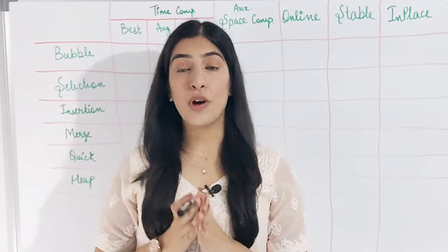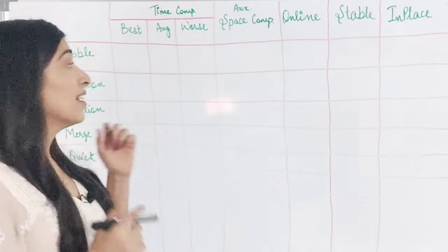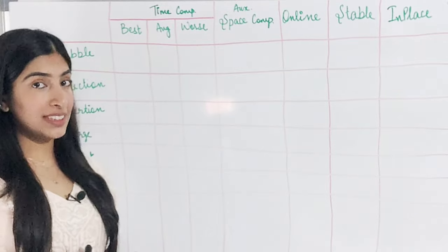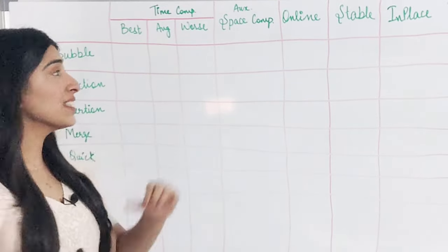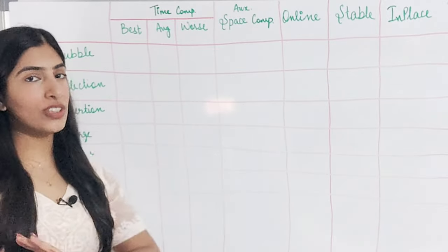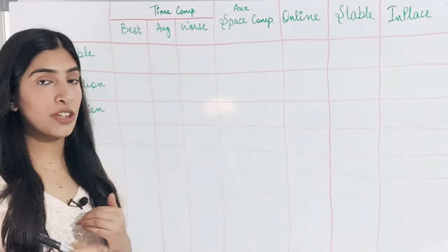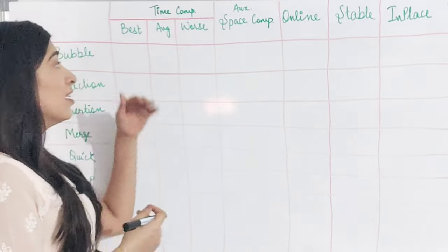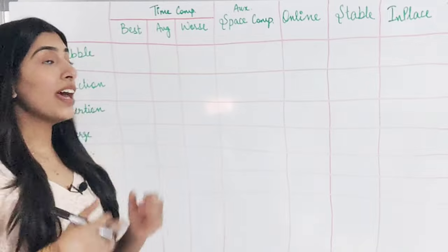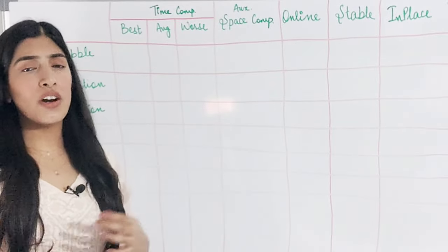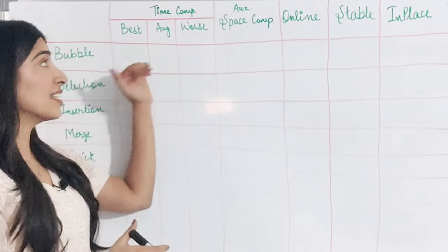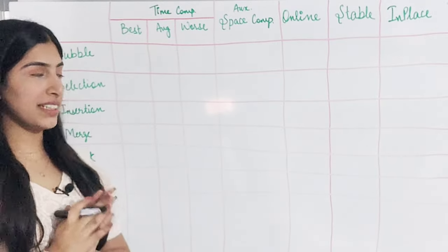Let's see which properties we are going to compare for these sorting algorithms. The first one will obviously be time complexities — we are going to compare all three cases: best case, average case, and worst case. The best case should be when the array given to us is already sorted, so we require the minimum number of operations. The worst case is when we need to perform the maximum number of operations. In the average case, we consider all possible inputs and take the average of the time complexities.